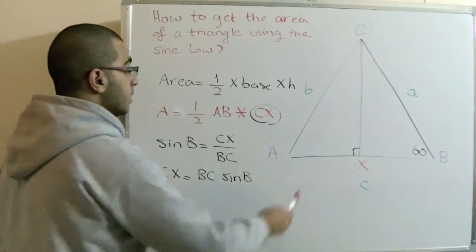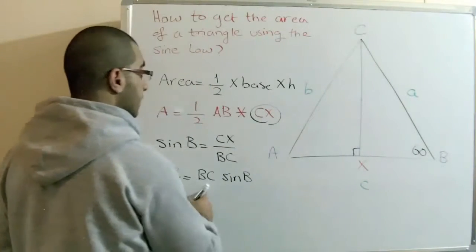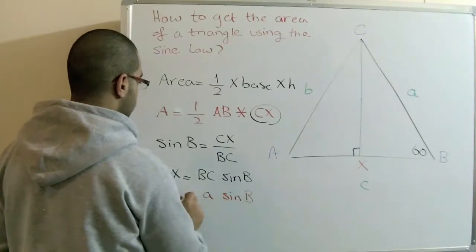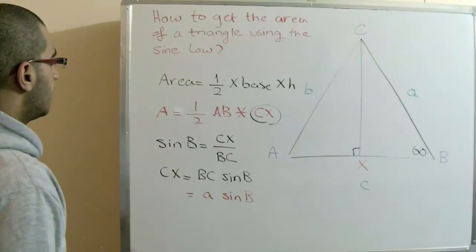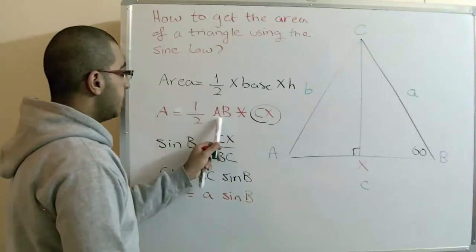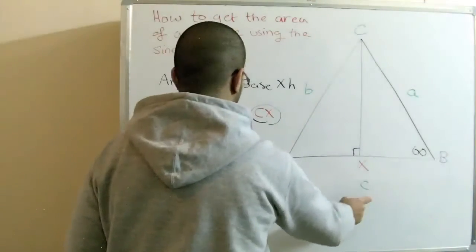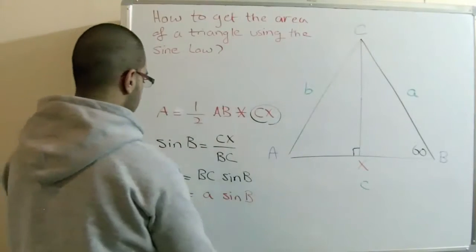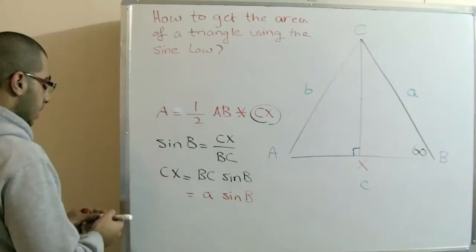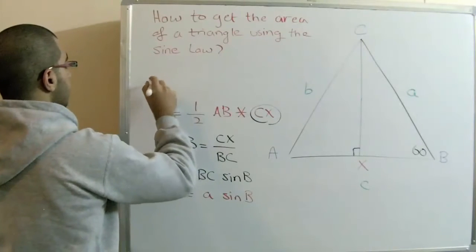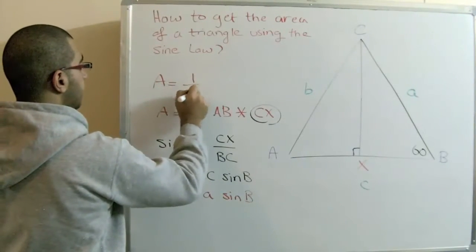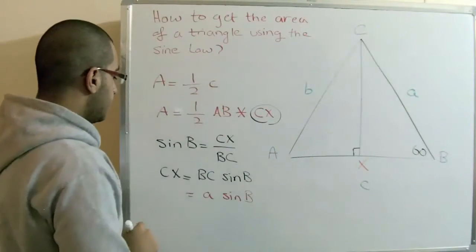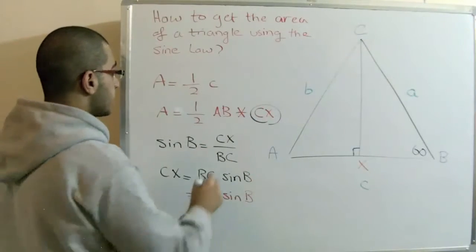So CX equals A·sine(B). And the base AB here equals C. Let's substitute these values into the original formula.